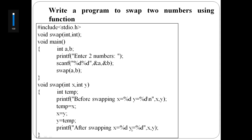This function does not return any value, so return type is void. So the function declaration is: void swap with two integer parameters, int, int.